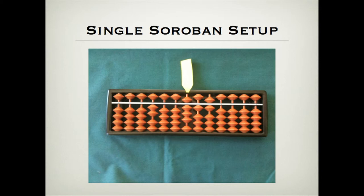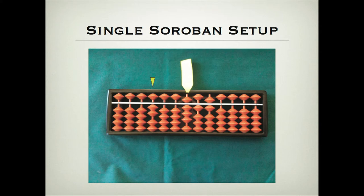We set the multiplicand first — here's the eight set on the central unit rod. Then we set the multiplier over here on the left: here's the two, leaving two vacant rods in between the multiplier and the multiplicand. And then we put the product, two times eight is sixteen, over here on the right, adjacent to the multiplicand.